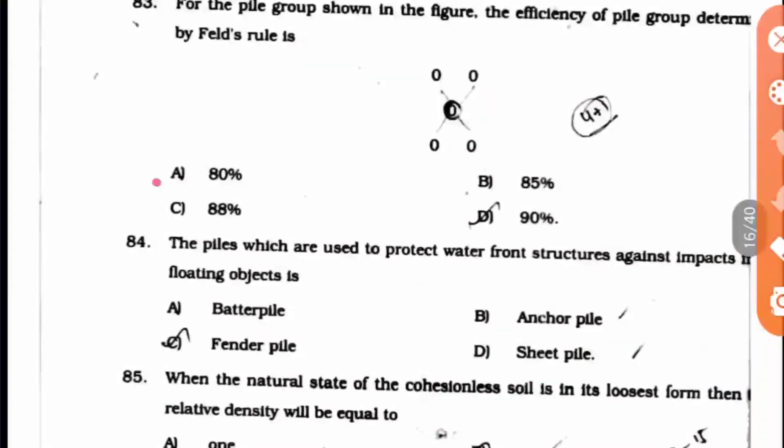Question 84: The piles which are used to protect waterfront structures against the impacts of floating objects is what? Here option C, fender pile, is the right answer.